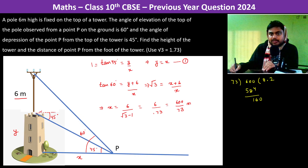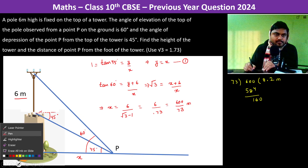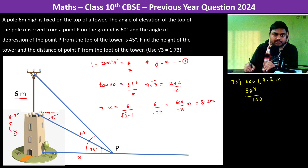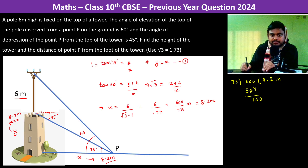This gives x = 8.2 meters. Therefore the height of the tower, which is y, is equal to 8.2 meters, and the point P is located at a distance of 8.2 meters from the foot of the tower. Thank you.